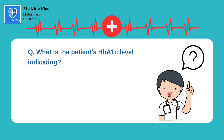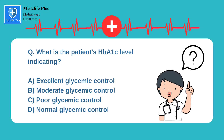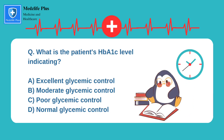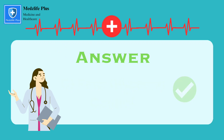Question number 3: what is the patient's HbA1c level indicating? A. Excellent glycemic control. B. Moderate glycemic control. C. Poor glycemic control. D. Normal glycemic control. The right option is C, that is poor glycemic control. HbA1c is a measure of average blood glucose levels over the past 2 to 3 months. An HbA1c level of 8.5% suggests that the patient's blood glucose levels have been consistently elevated, indicating inadequate control of diabetes.